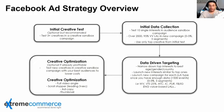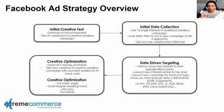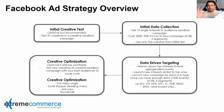Bismillah. Sab se pehle jab hum ad banana shuru karte hain, main aap se yeh bolonga ke aap ne kam az kam jo bhi product nikala hai uske 4 se lekar 8 — bare minimum kuch log 3 bhi karte hain lekin main 4 hi bolta hun — 4 se 8 different visual creatives nikalne hain depending on your budget. Yeh videos hain, aur abhi aap ne sirf unko test karna hai. This is the initial creative testing, jisko hum creative sandbox campaign bolte hain. Sandbox hota kya hai — it is like the testing phase.